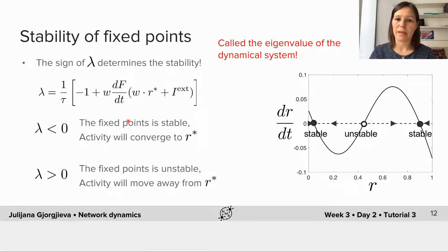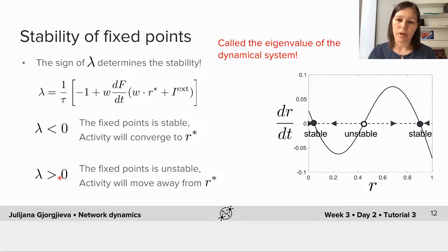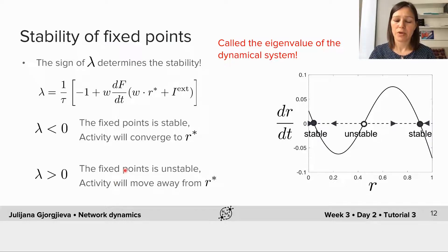We consider two cases. When lambda is negative, the solution is an exponential with a negative exponent, which decays in time. This means the perturbation completely decays and the activity converges back to the fixed point — so the fixed point is stable. This is the case for the two fixed points identified as stable graphically: the one with the low and the one with the high value. If the exponent is positive, the perturbation grows in time, the activity moves farther from the fixed point, and the fixed point is unstable — which is the case for the intermediate fixed point.